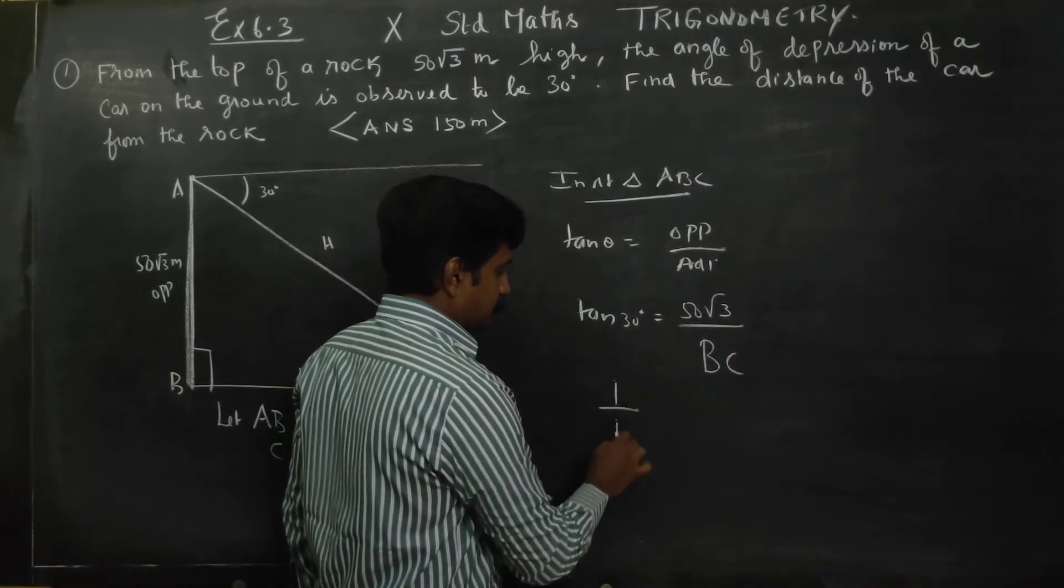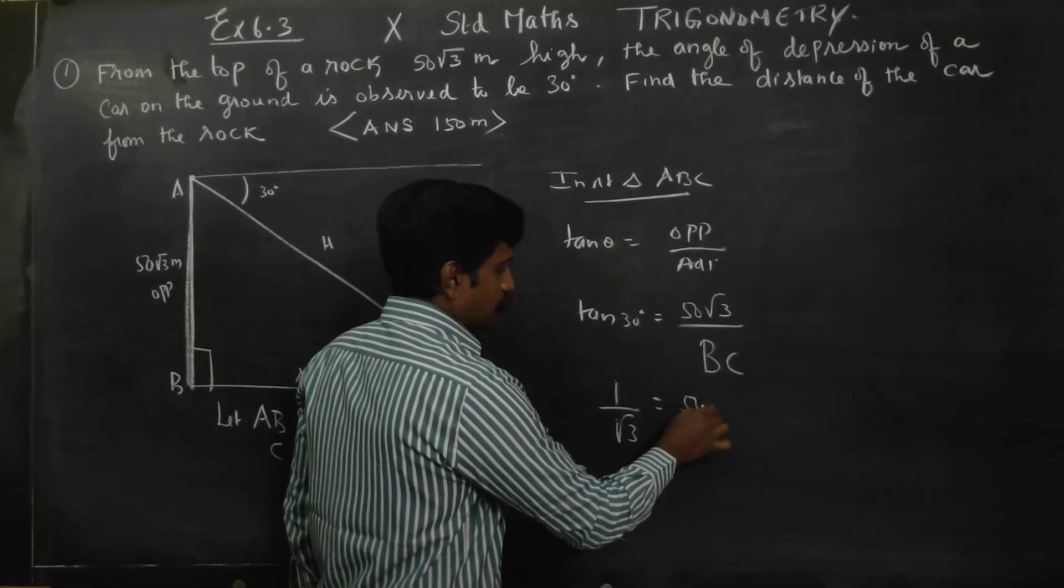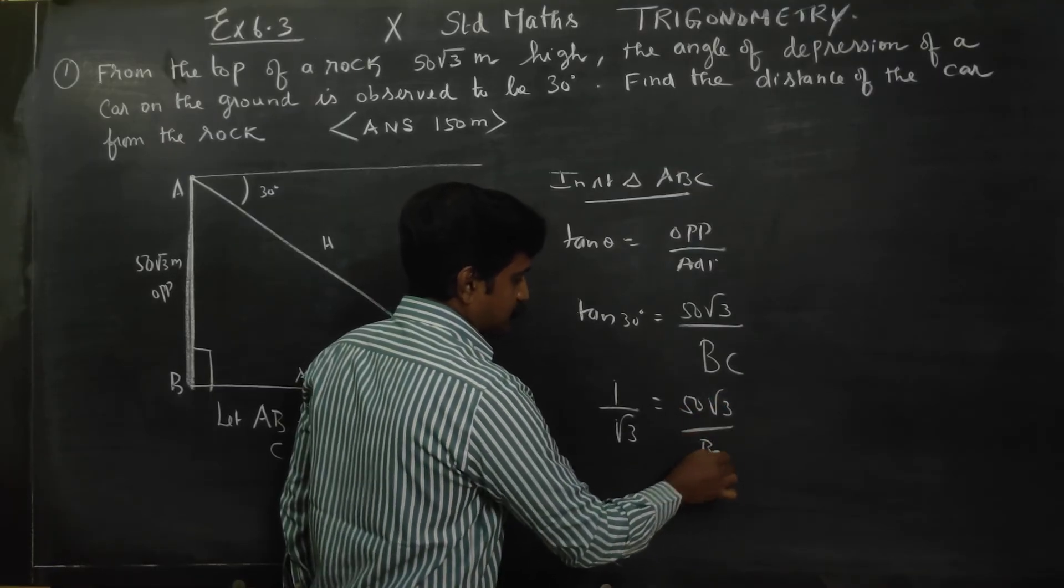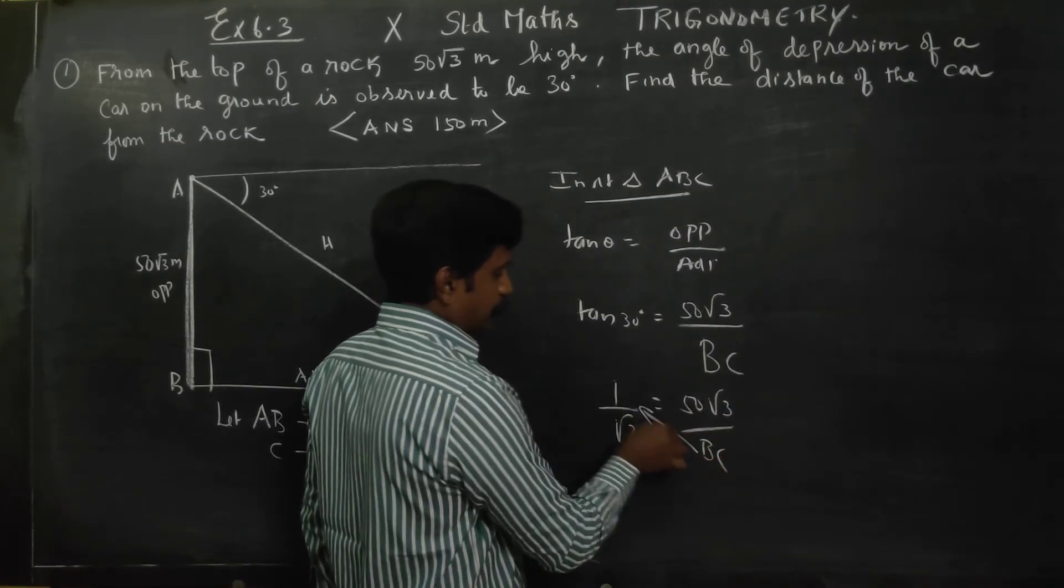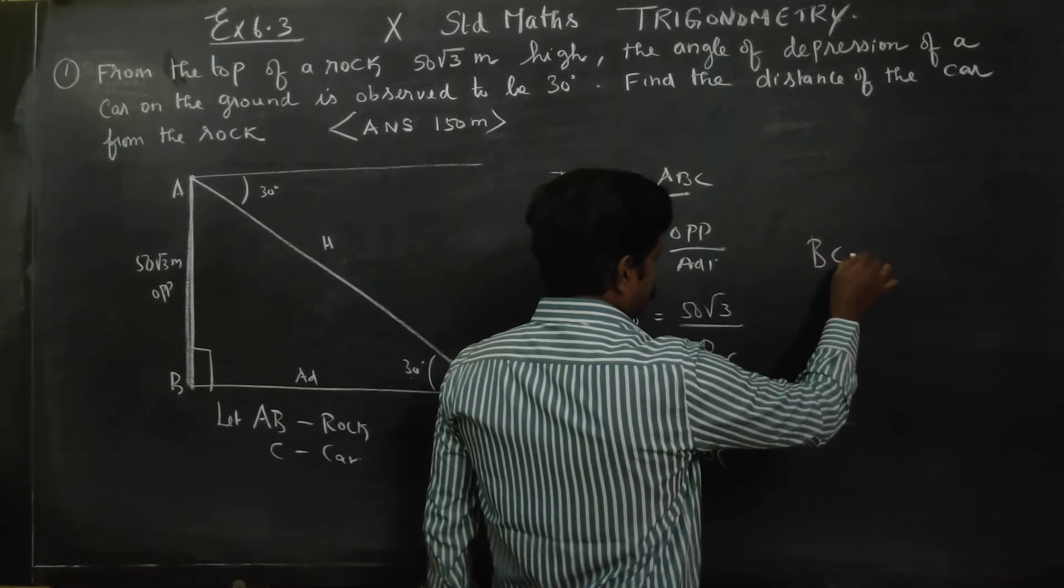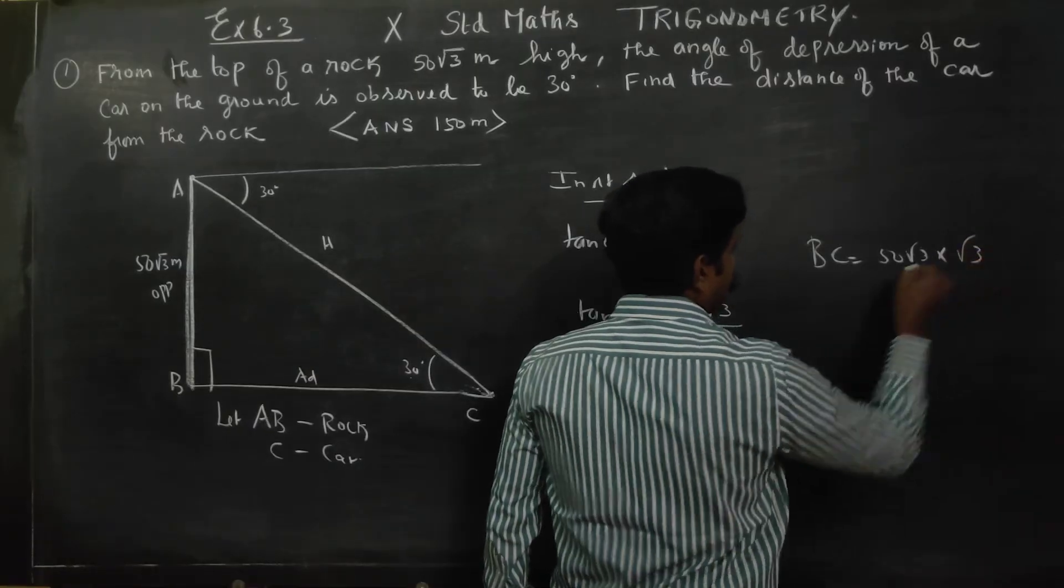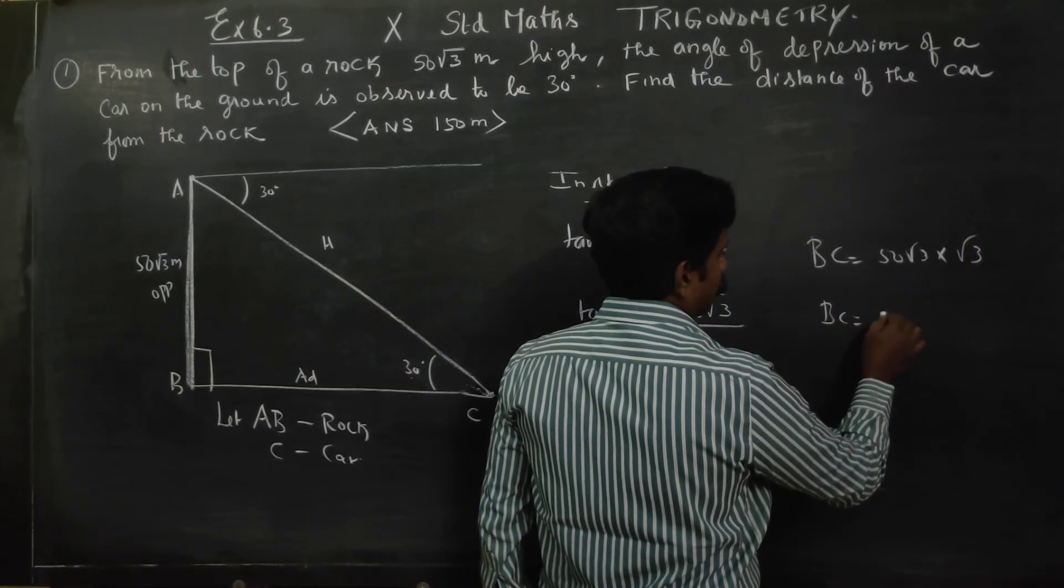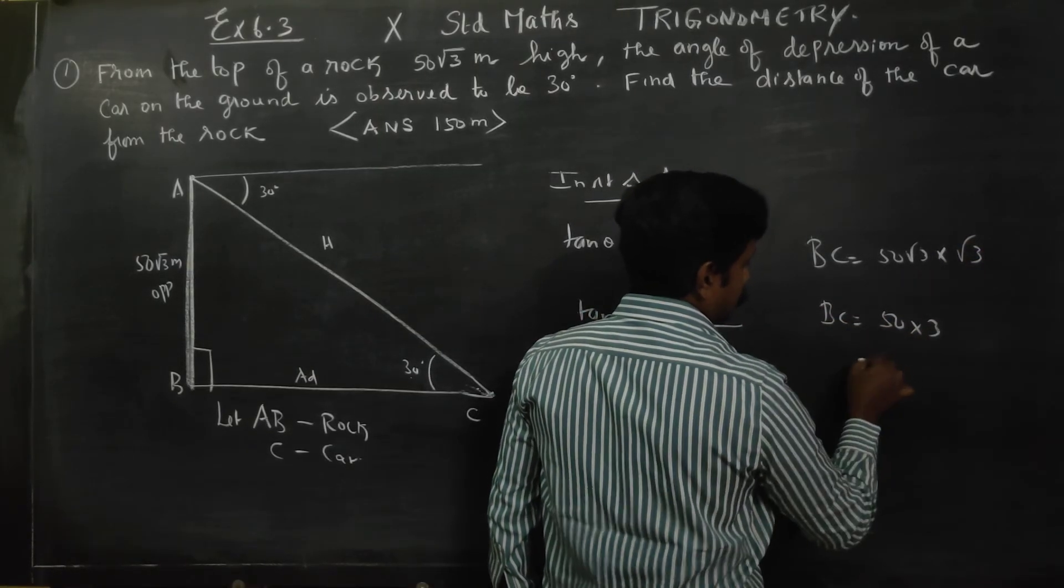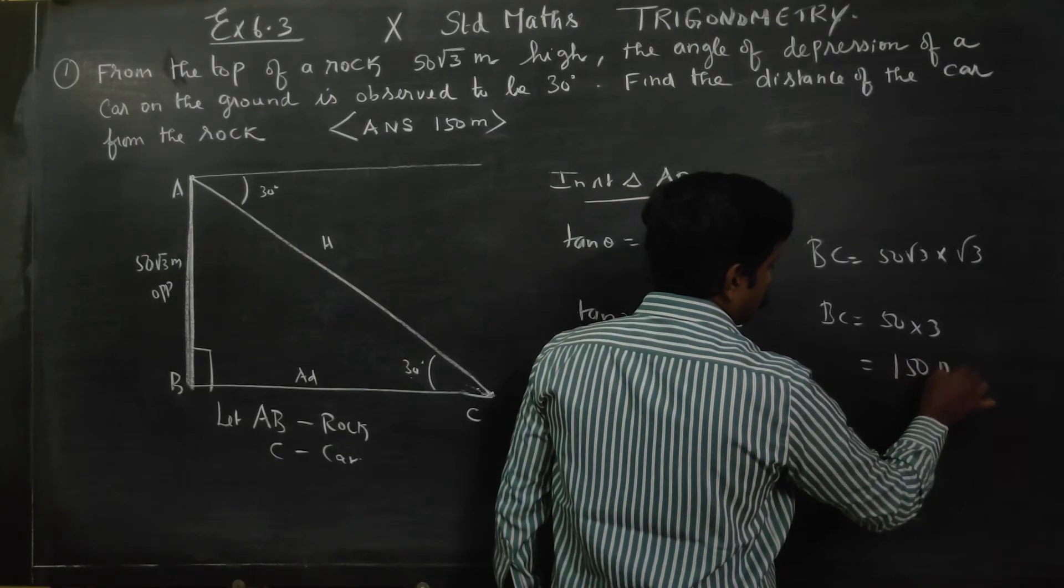Tan theta answer is 1 by root 3 equals 50 root 3 by BC. Just cross multiply. BC equals 50 root 3 into root 3, which becomes 3. Answer is 150 meters.